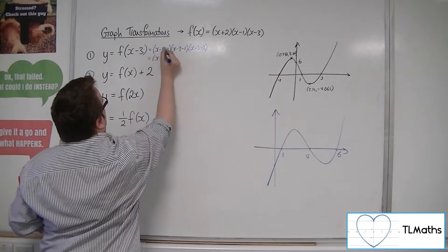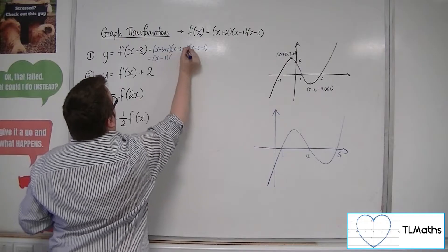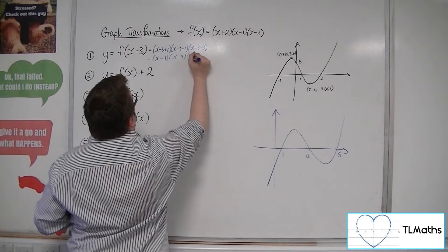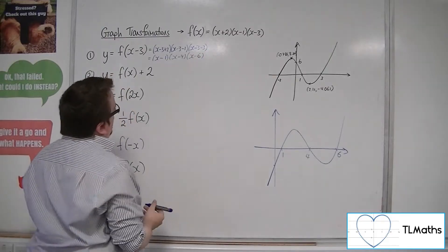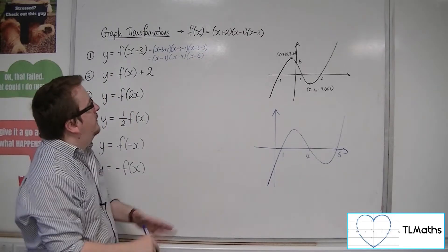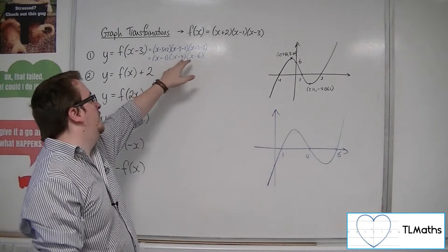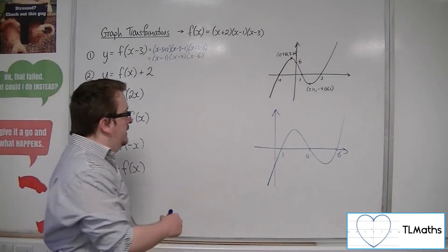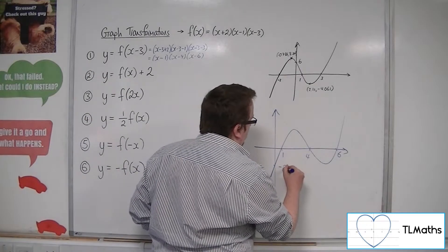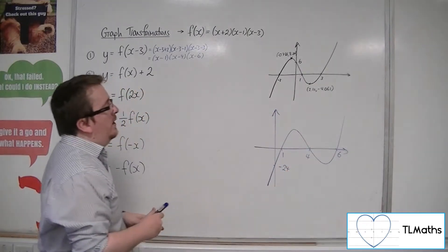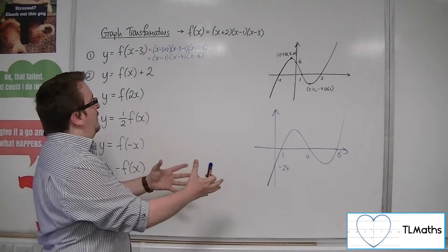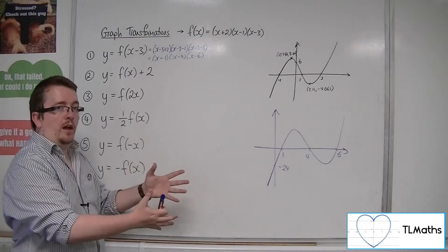If I expanded those brackets, I would get a constant term of -1 times -4 times -6, which is -24. So this point would be actually -24, so I can work that one out. So that is what the translated curve would look like.